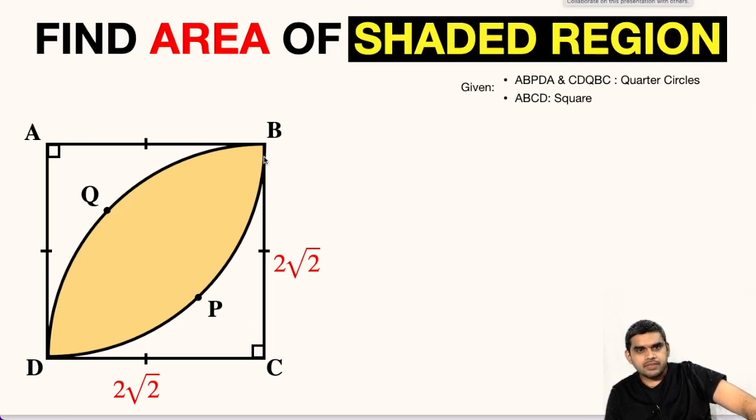In this question a square ABCD is given, each side of this square is 2√2 units. Also there are 2 quarter circles whose centers are at point C and A respectively. We are asked to find the area of this common region between the 2 quarter circles, that is this yellow shaded region.